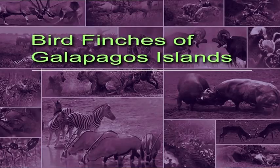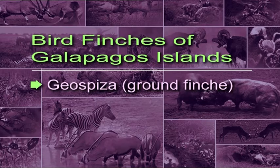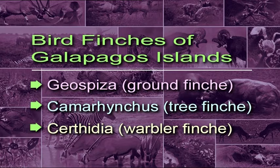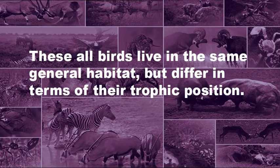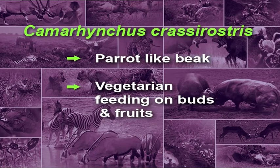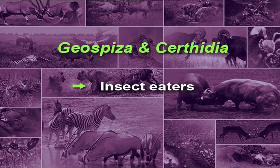Trophic niche is concerned with the trophic position of an organism. Two species may live in the same habitat but occupy different trophic niches because of differences in food habits. Finches of the Galapagos Islands provide a very good example of trophic niche. These birds belong to three genera: Geospiza (ground finch), Camarhynchus (tree finch), and Certhidea (warbler finch). All these birds live in the same general habitat but differ in trophic position. For example, among tree finches, Camarhynchus crassirostris has a parrot-like beak and is basically vegetarian, feeding on buds and fruits, while the rest are insect eaters.